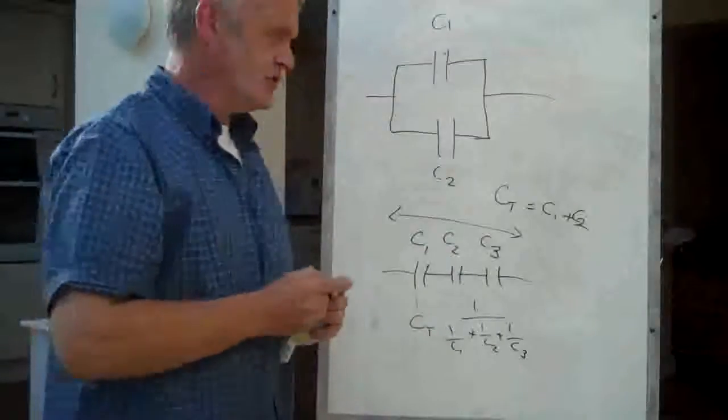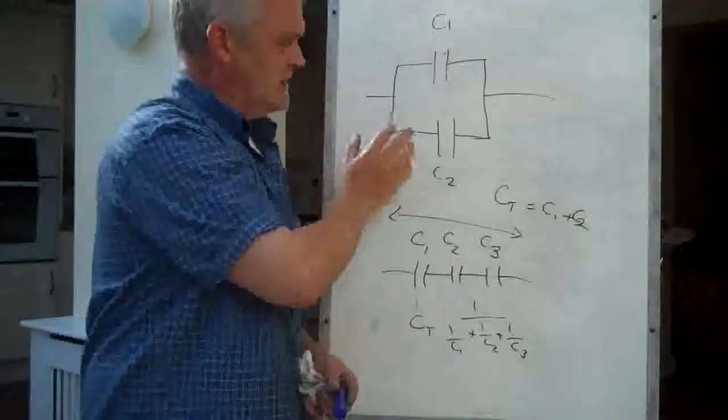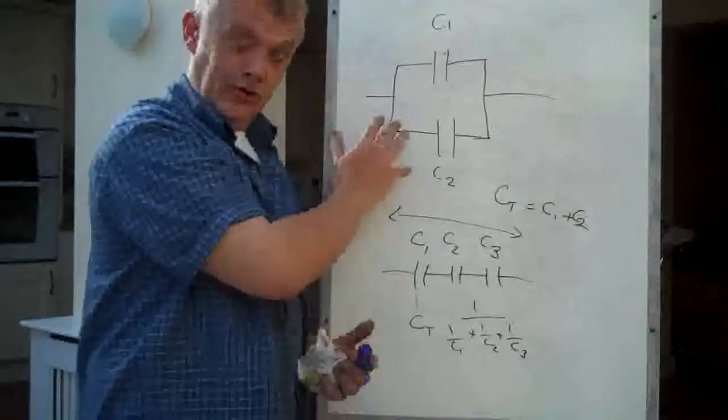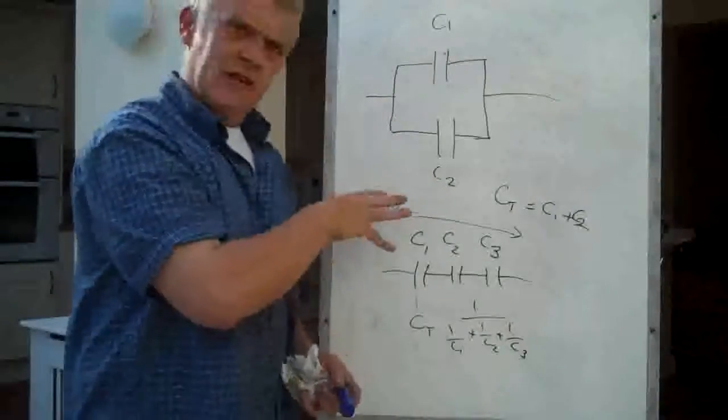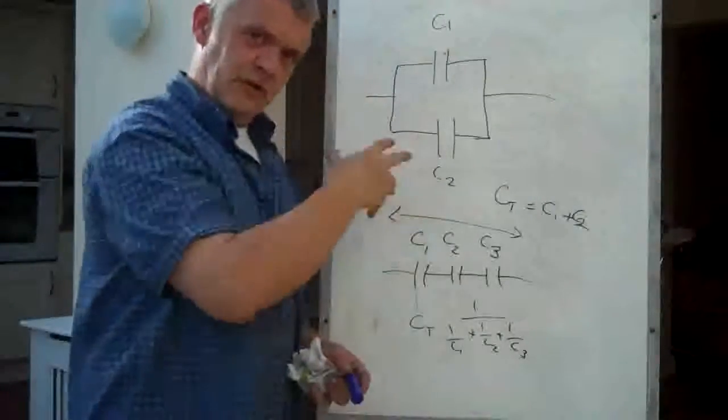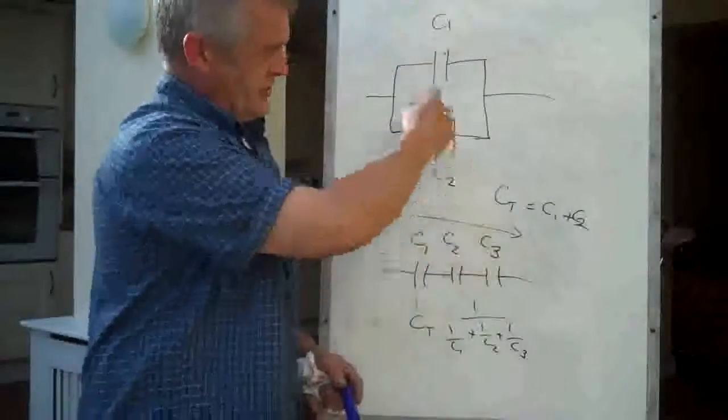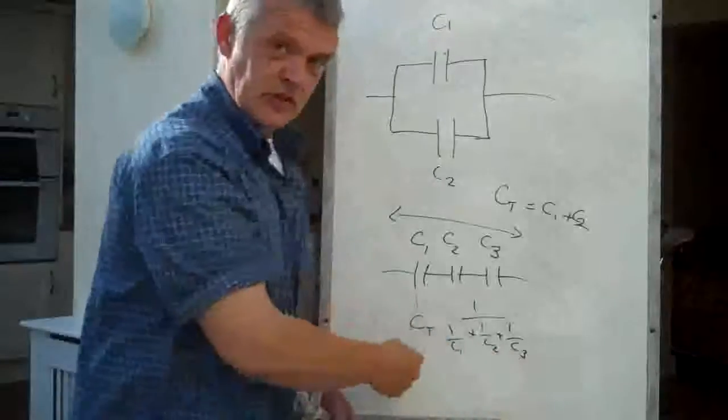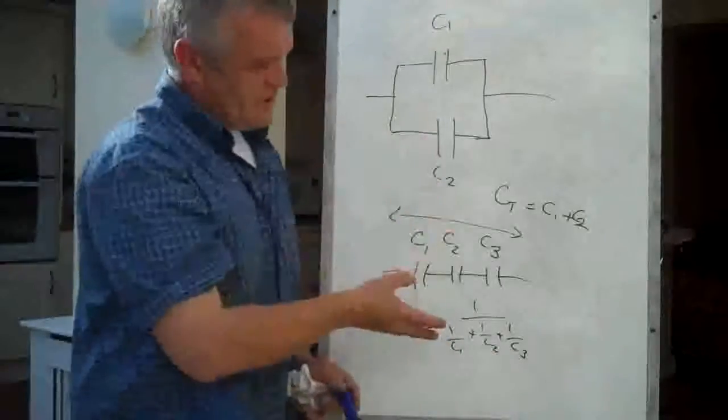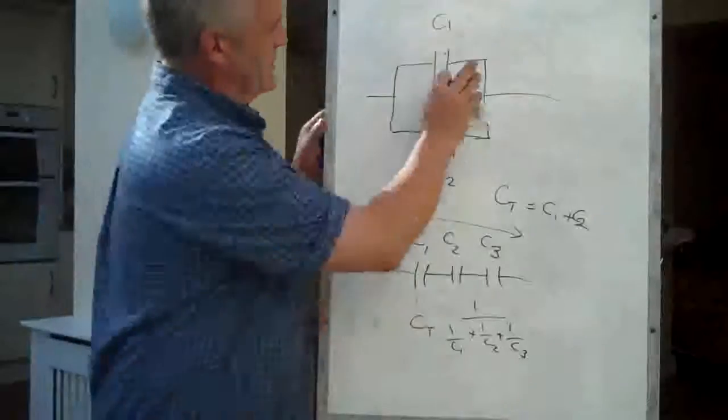We're not working with terribly high voltages and we'll want high capacitances, so it's in parallel really that you're more interested in. Interestingly enough, this is the reverse of resistors. So resistors in series you just add them up, resistors in parallel it's this. So to calculate capacitance is the reverse of calculating resistance, which is quite interesting.